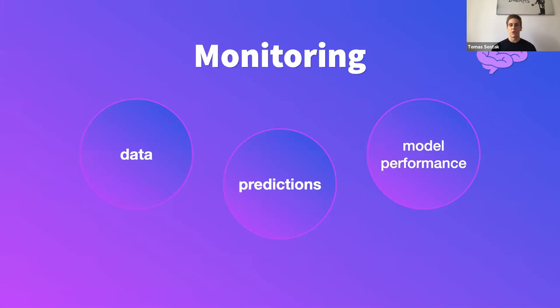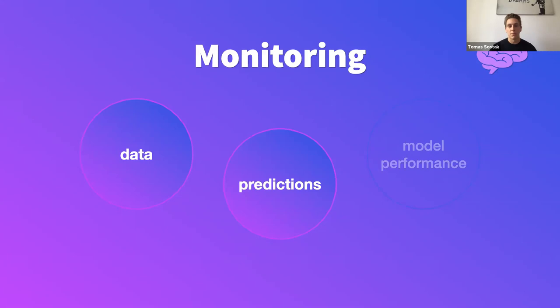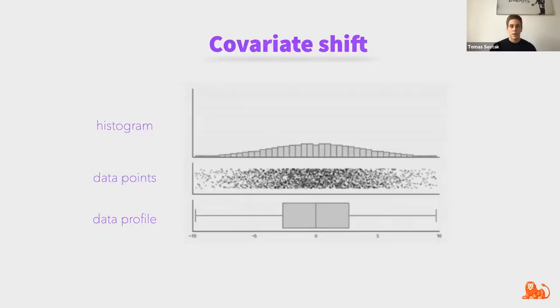We split monitoring into three main parts: data monitoring, predictions monitoring, and model performance monitoring. For model performance, there are quite a few open source solutions we've tried — namely MLflow and Seldon, among others. That part is covered quite well. What we haven't found covered is data monitoring and predictions monitoring. To be frank, MLflow and Seldon do cover basic data profiling — tracking mean and standard deviation — but as you'll see from examples later, this is not enough if you really want to see if your data is changing over time.